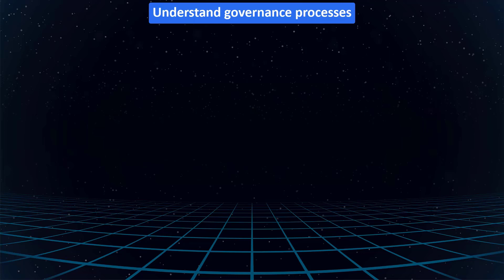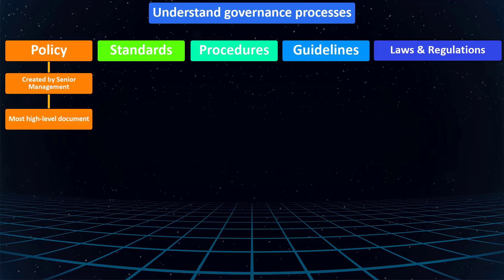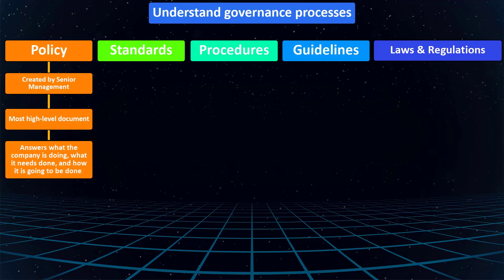A policy is created by those in senior management — those who have the word 'chief' or 'vice' in their title. Policies are the highest-level documents in an organization. They answer the question of what a company is doing, what it needs done, and how they're going to do it. This is an example of a high-level policy created by, and most importantly approved by, someone in management.